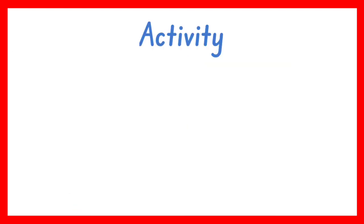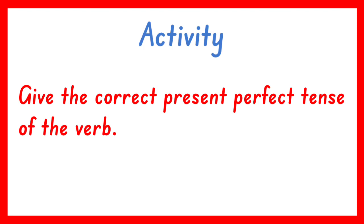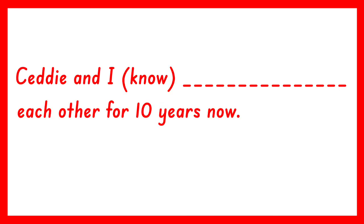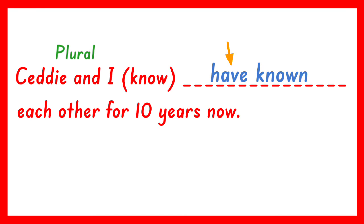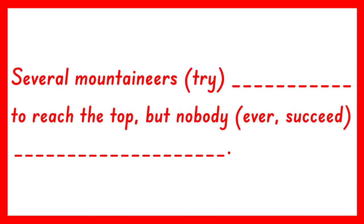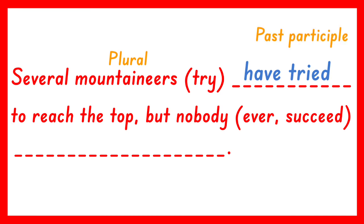Now let us have an activity. Give the correct present perfect tense of the verb to complete each sentence. First: Sedi and I (know) each other for 10 years now. The answer is have known. Have is used because the subject is plural — Sedi and I — and known is the past participle of know. Next: Several mountaineers (try) to reach the top. The correct present perfect form is have tried because the subject mountaineers is plural, and the past participle of try is tried.